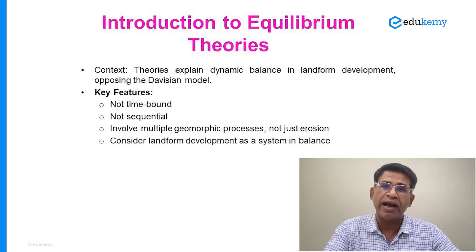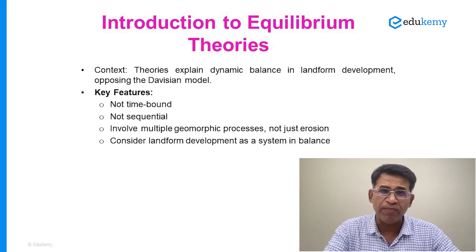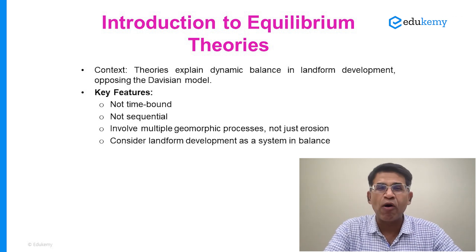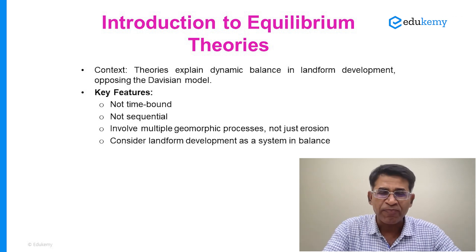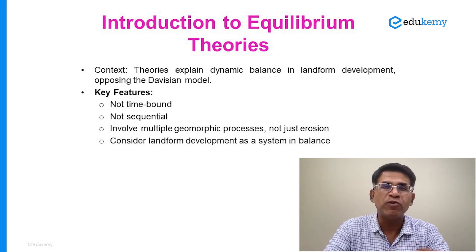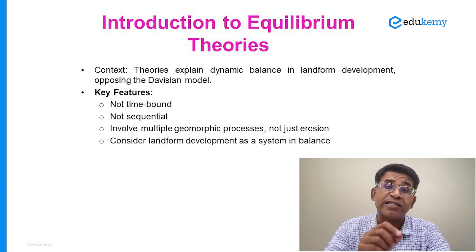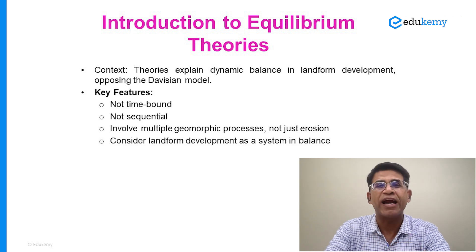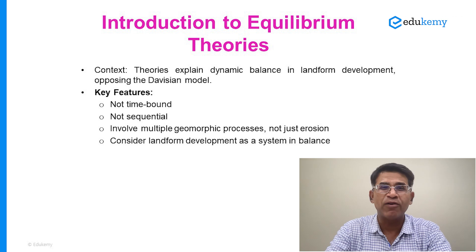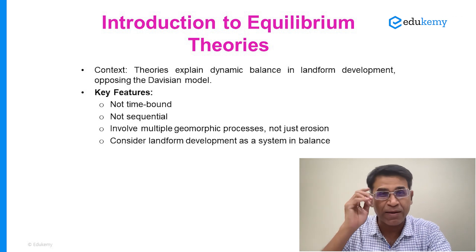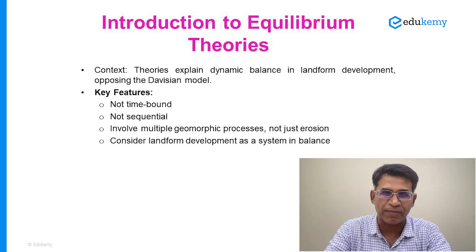Gilbert in the 1870s had talked about the idea of equilibrium — that was one. The second important theory of equilibrium was given by J.T. Hack, who gave his equilibrium theory under lithological adjustments to landform development. The third important theory is Stoller's theory, which talks about the equilibrium concept as a part of the open systems concept.